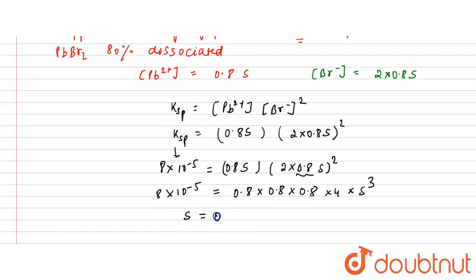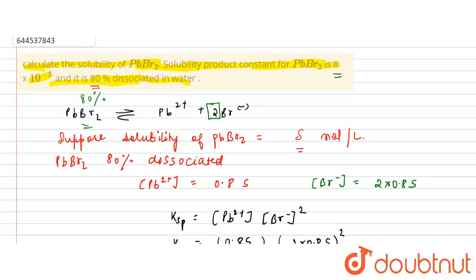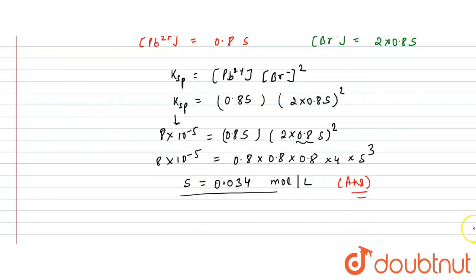Solving for s, we get s = 0.034 moles per liter. This is the solubility of PbBr₂ and is the required answer.